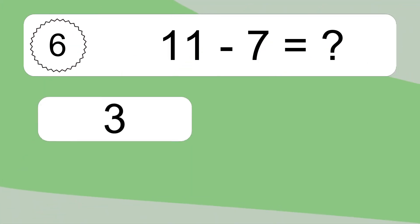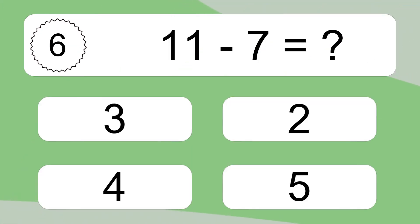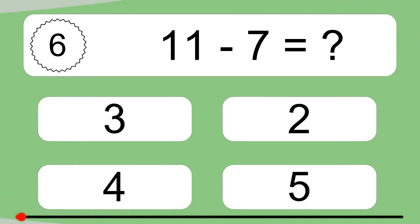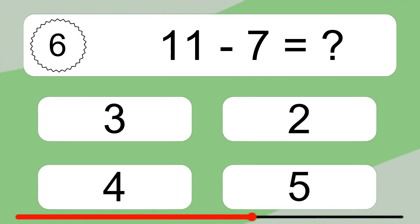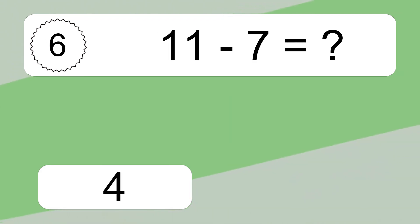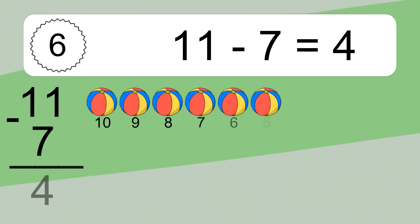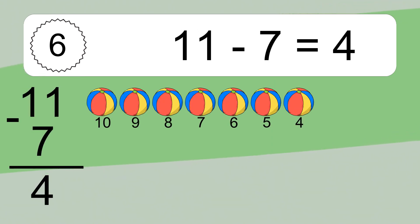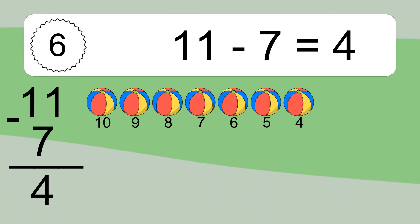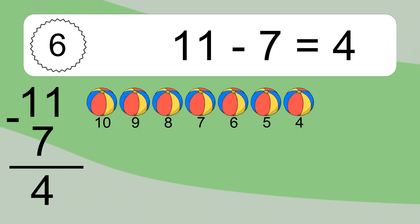11 minus 7 equals what? 11 minus 7 equals 4. Let's count it: 10, 9, 8, 7, 6, 5, 4.